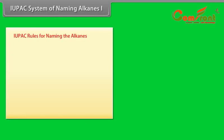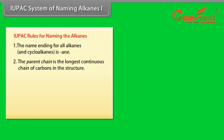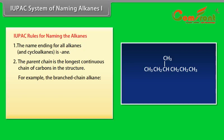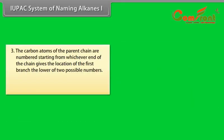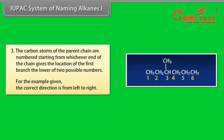IUPAC rules for naming alkanes: 1. The name ending for all alkanes and cycloalkanes is -ane. 2. The parent chain is the longest continuous chain of carbons in the structure. For example, the branched chain alkane is regarded as being made from the parent chain CH3-CH2-CH2-CH2-CH2-CH2-CH3 by replacing an H on the third carbon from the left with CH3. 3. The carbon atoms of the parent chain are numbered starting from whichever end gives the location of the first branch the lower of two possible numbers. For the example given, the correct direction is from left to right.